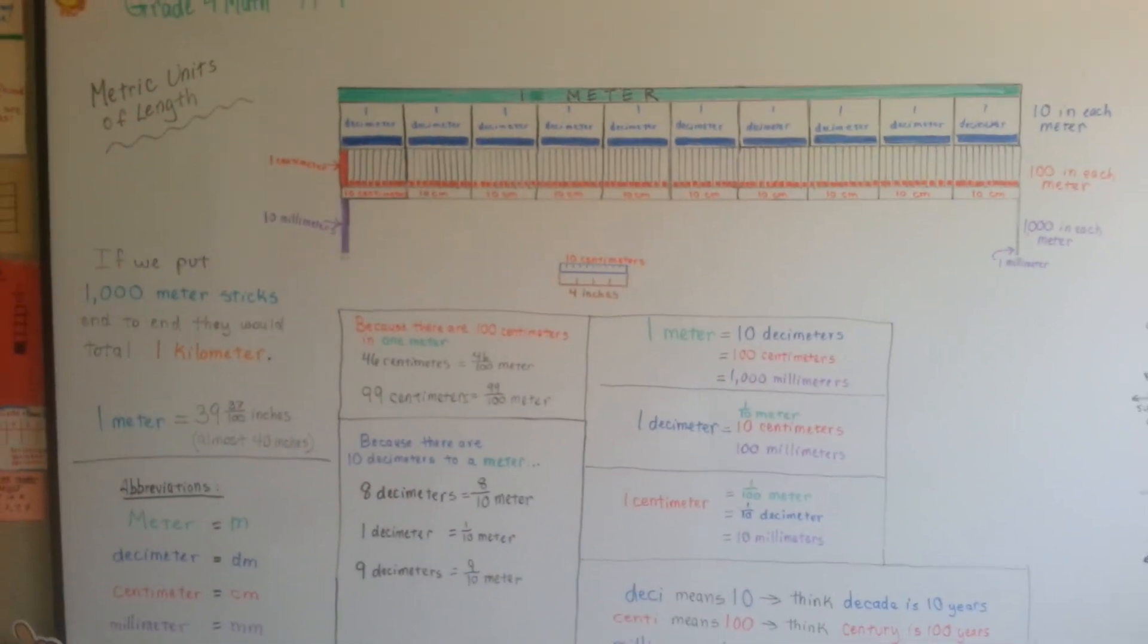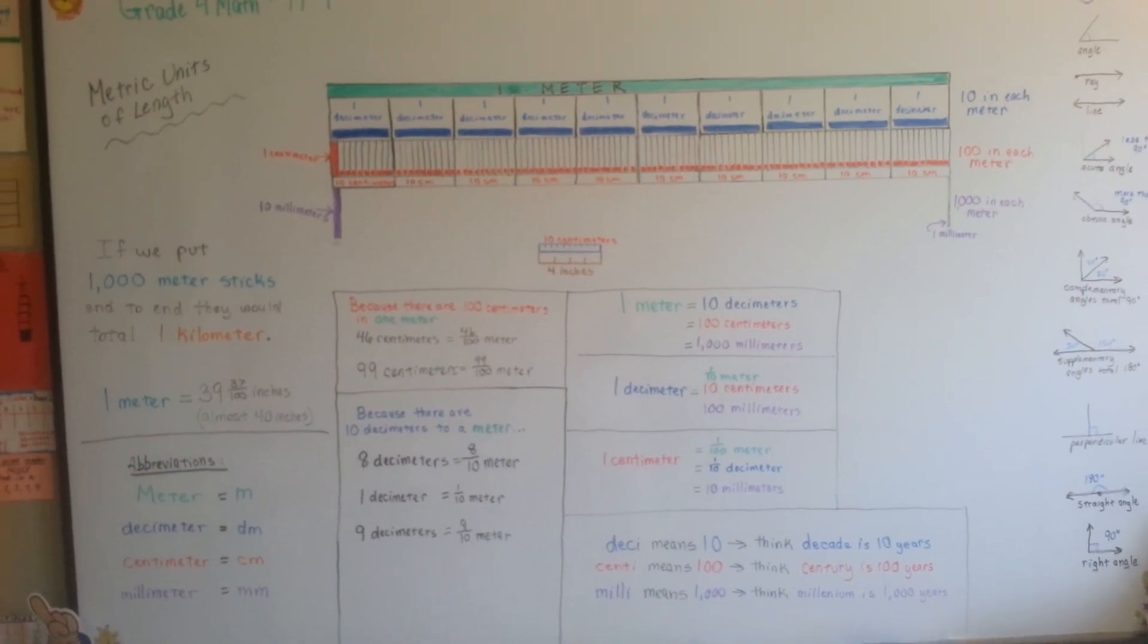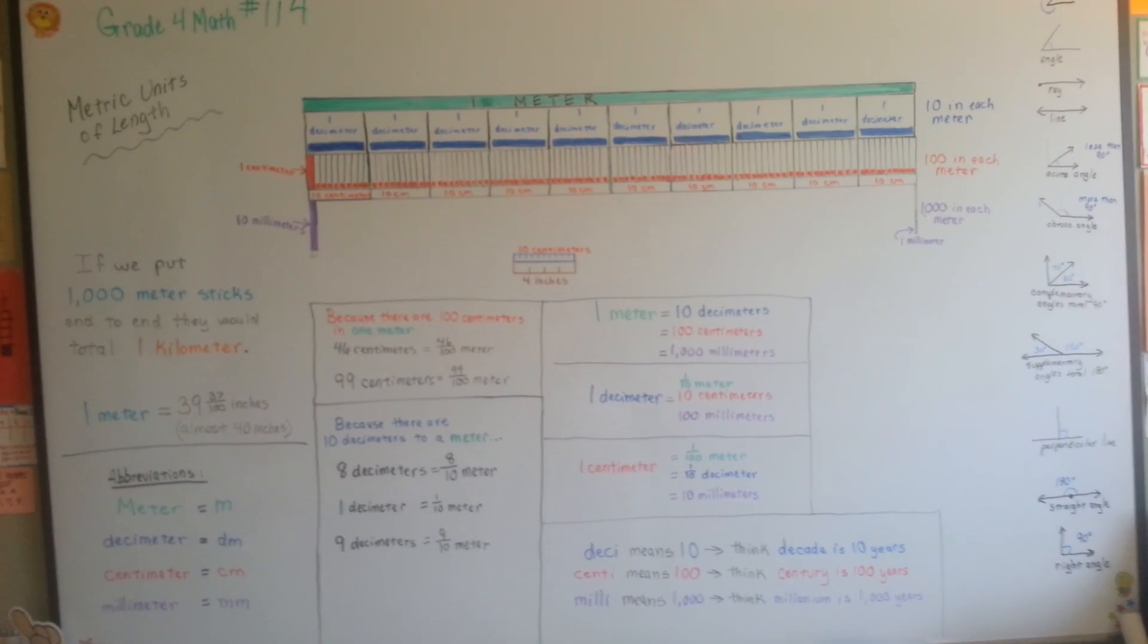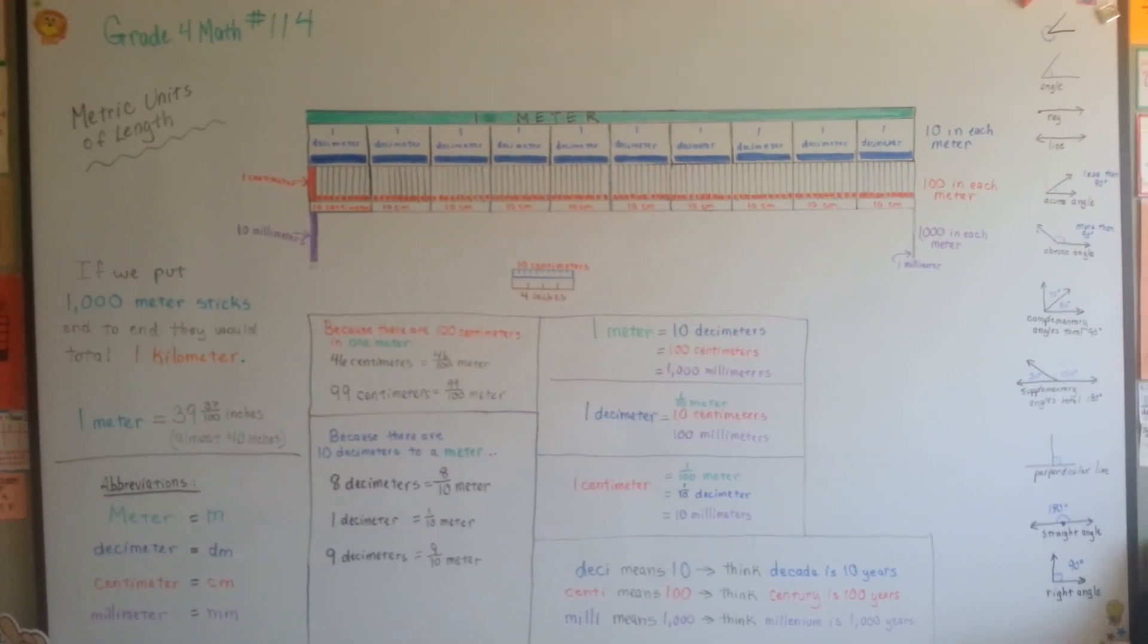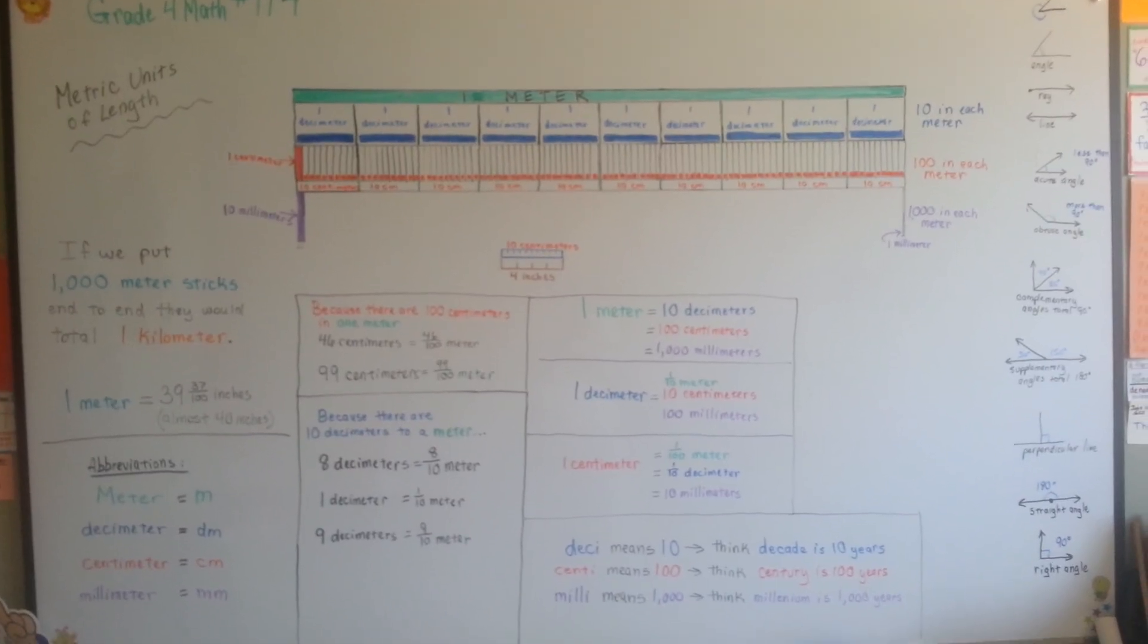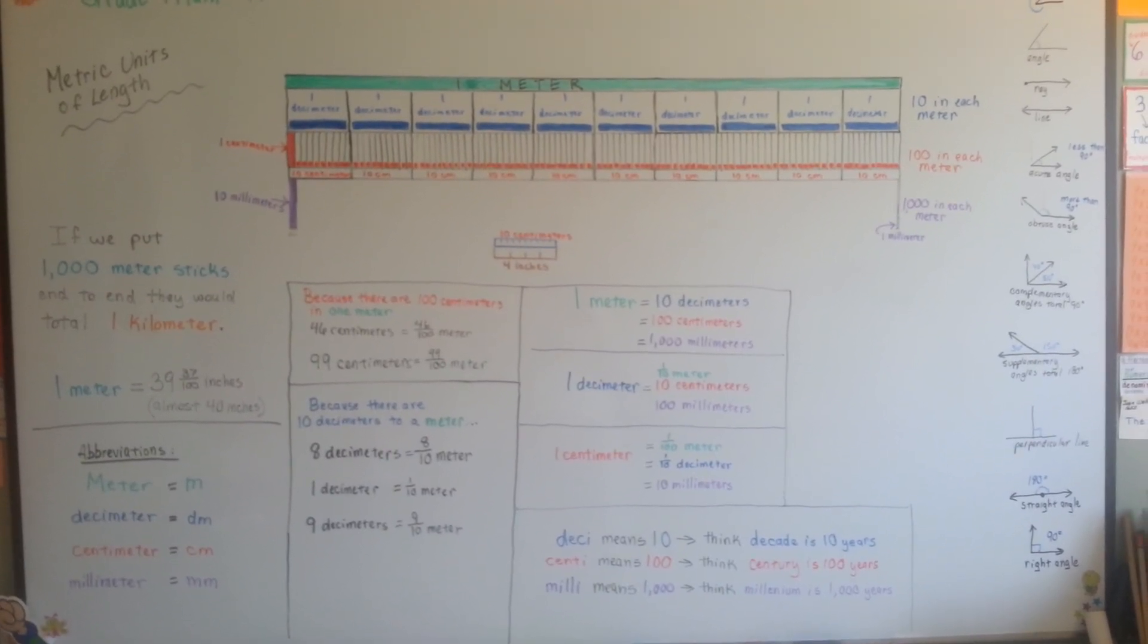Those are the metric units of length. They're all based off of ten. And we're going to talk about the metric units for volume and mass next. Hope to see you there. Bye!